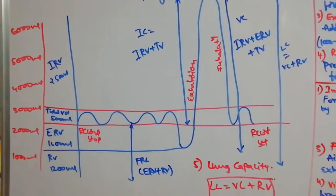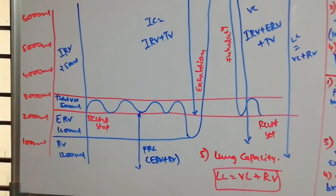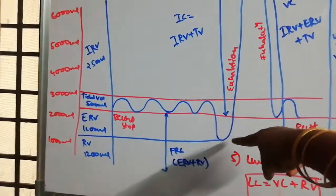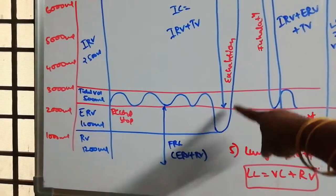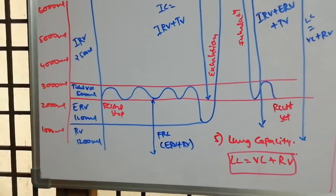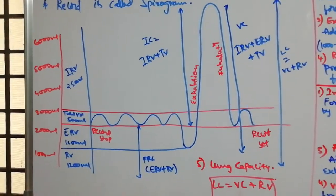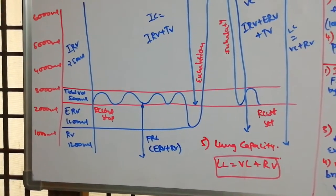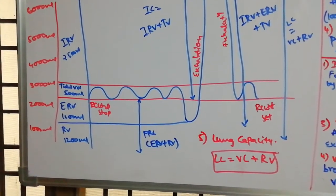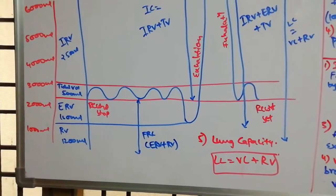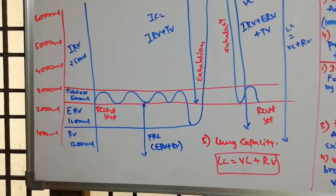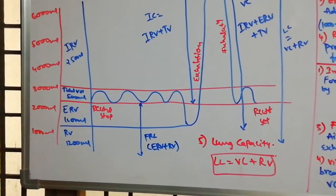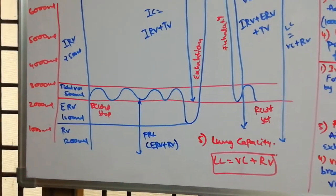IC is equal to IRV plus TV. Similarly, Expiratory Capacity (EC) is equal to TV plus ERV — that is, normal tidal volume followed by forceful expiration. IC covers inhalation reserve and tidal volume, while EC covers expiration reserve and tidal volume.